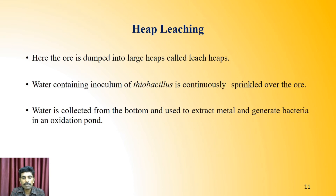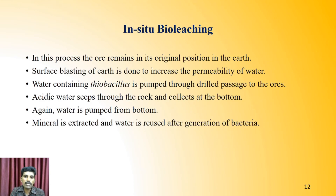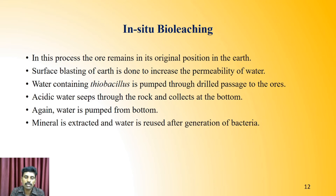In heap leaching, the ore is dumped into large heap sites called leach heaps. Water containing Thiobacillus species inoculum is continuously sprinkled over the ores, similar to slope leaching, and water is collected from the bottom to extract metals. In in-situ bio leaching, the ore remains in its original state in the earth. Surface processing is done to increase water permeability, water containing Thiobacillus is pumped through drilled passages to the ore area, and after seeping through the rock, the mineral-laden water is collected at the bottom, pumped out, and water is reused.